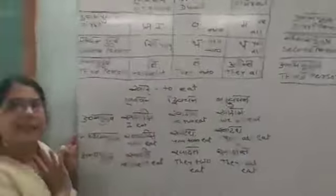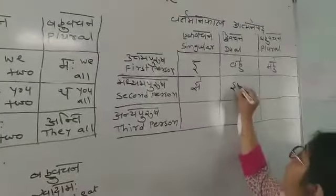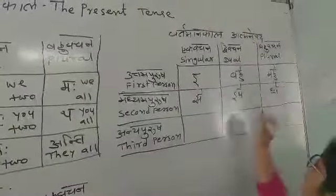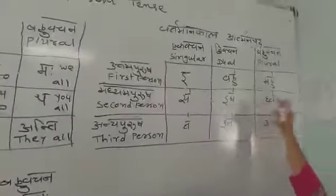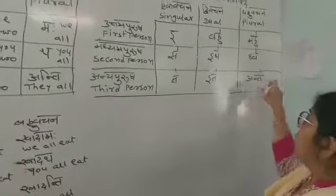Now we will go to Vartman Kaar Atmanepada. There are two padas: Parasmaipada and Atmanepada. In Atmanepada also we have Ek Vachan, Dvi Vachan, Bahu Vachan, and Uttama Purush, Madhyama Purush, Anya Purush — but the suffixes are different. They are: 'e', 'vahe', 'mahe' for Uttama Purush; 'se', 'ithe', 'dhve' for Madhyama Purush; 'te', 'ithe', 'ante' for Anya Purush.